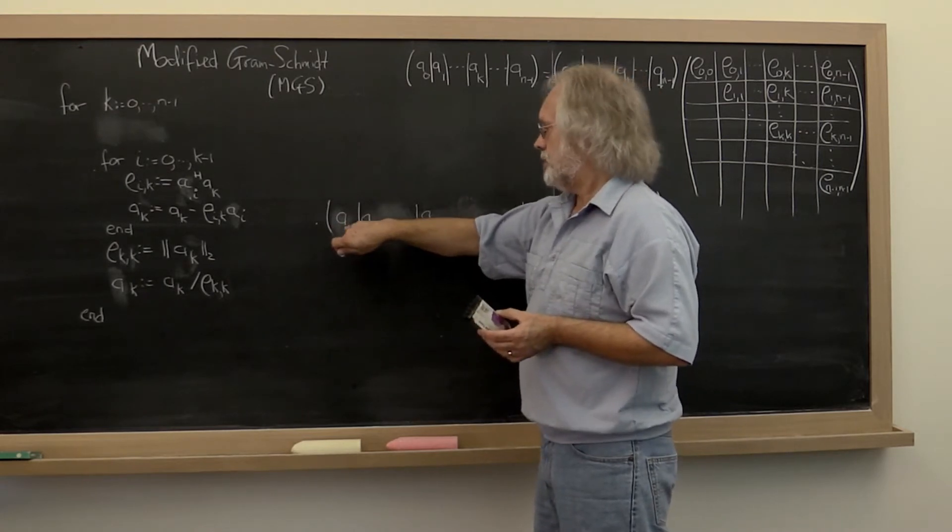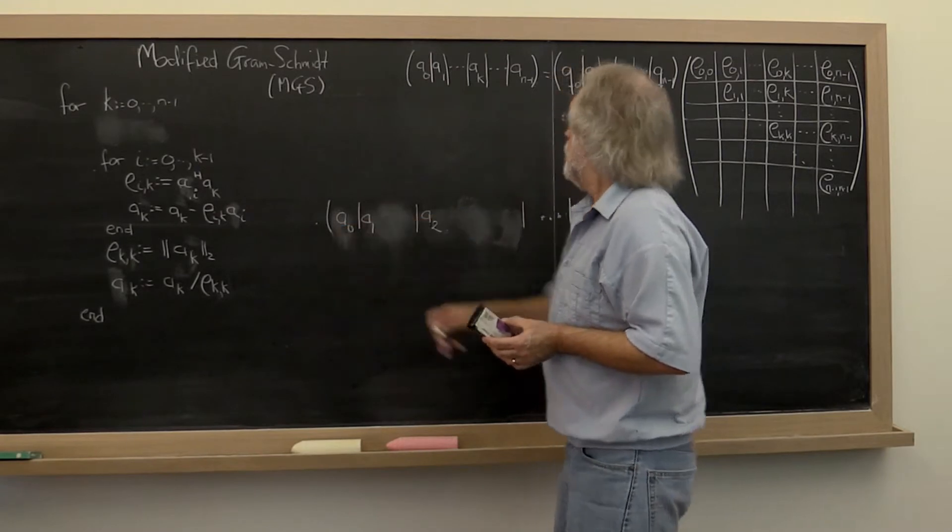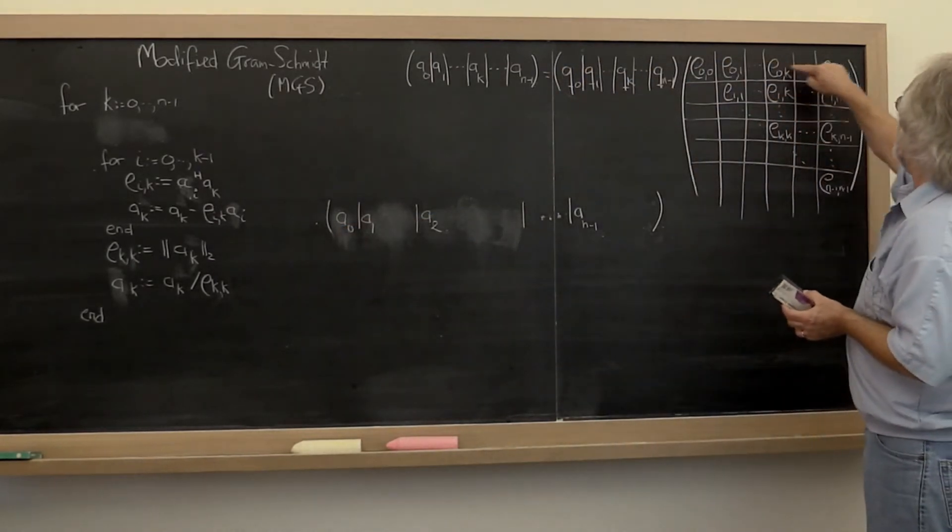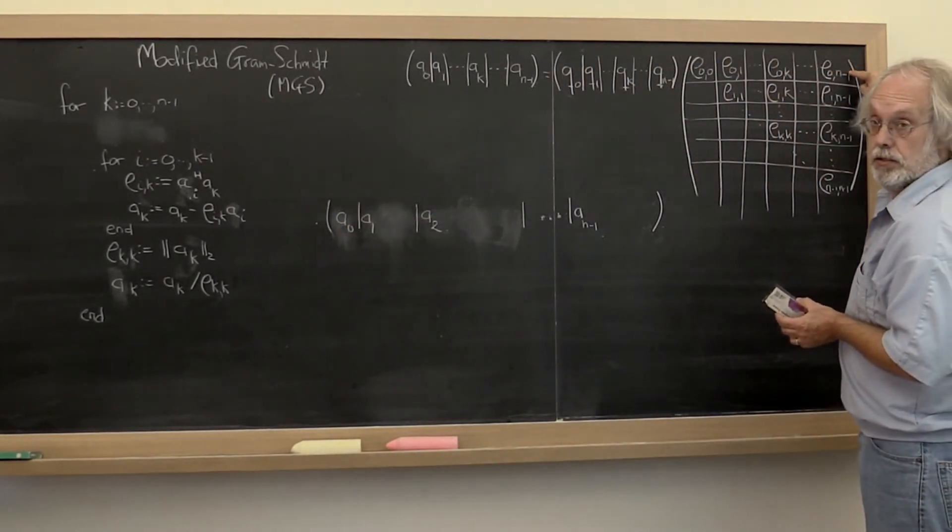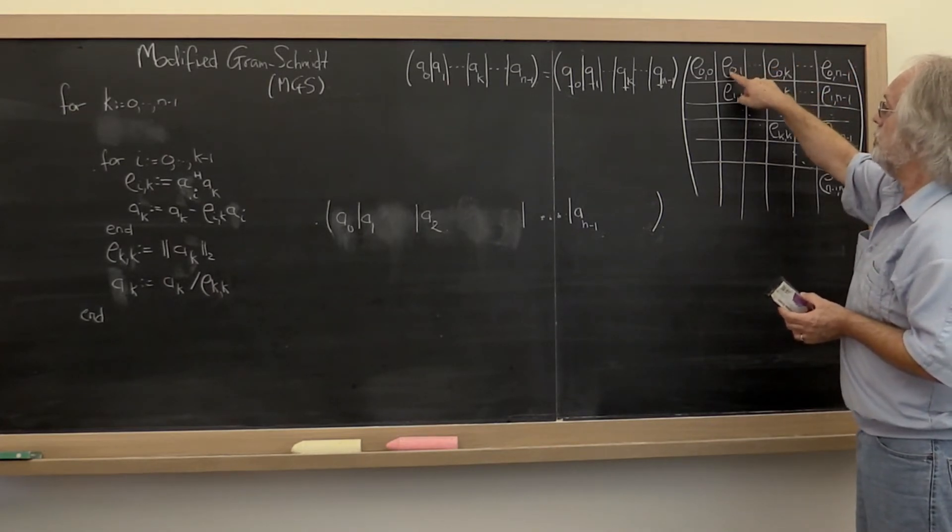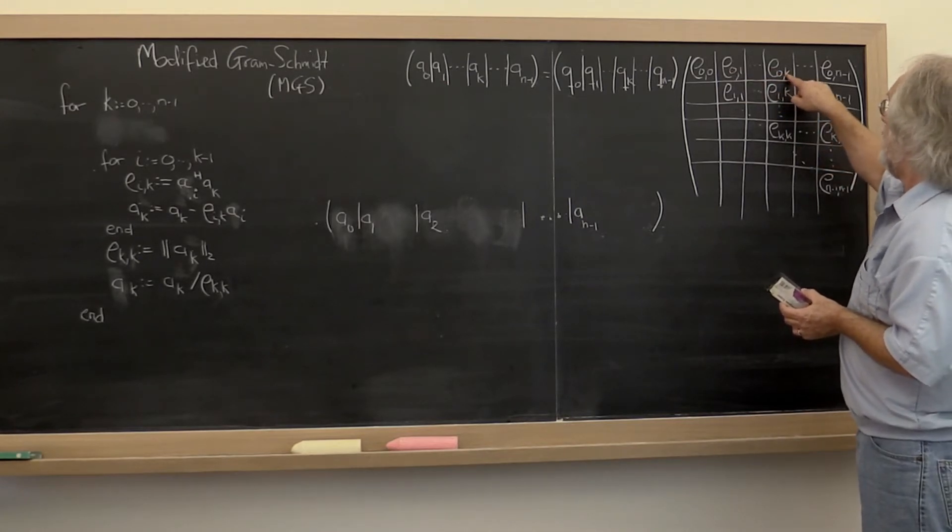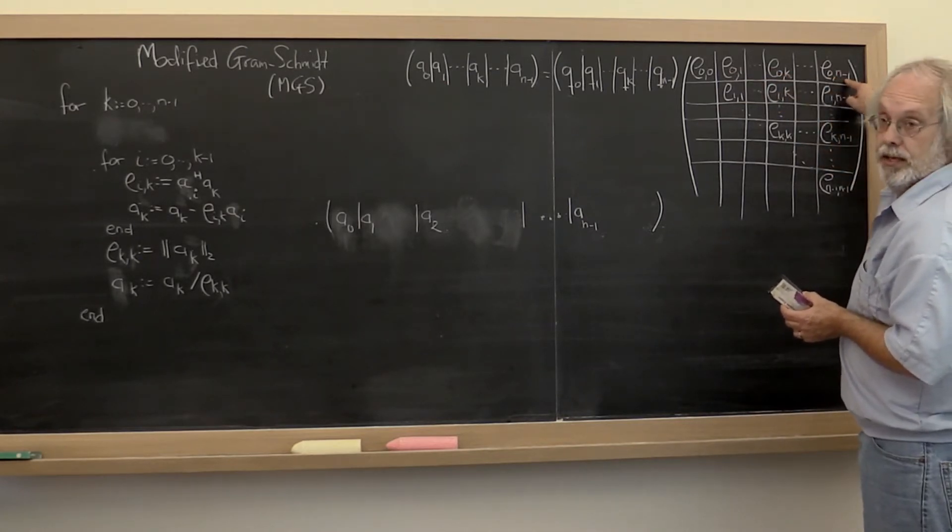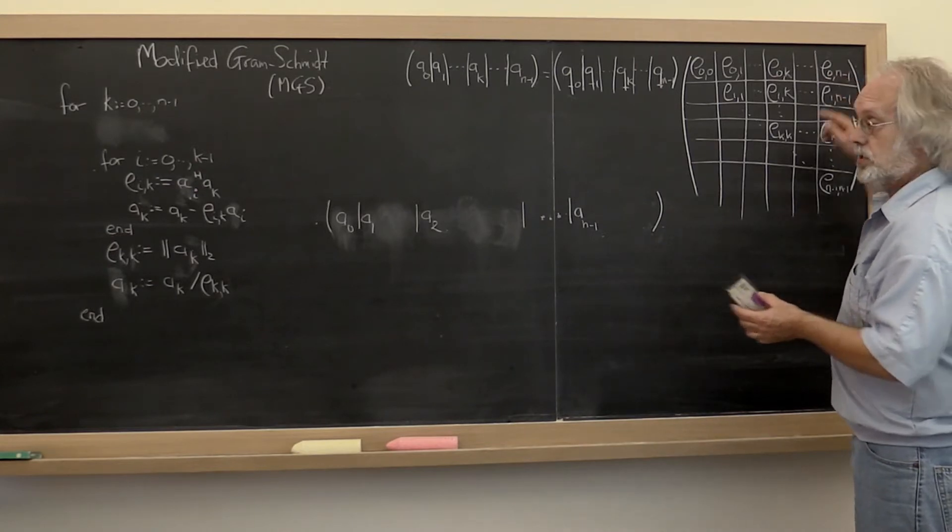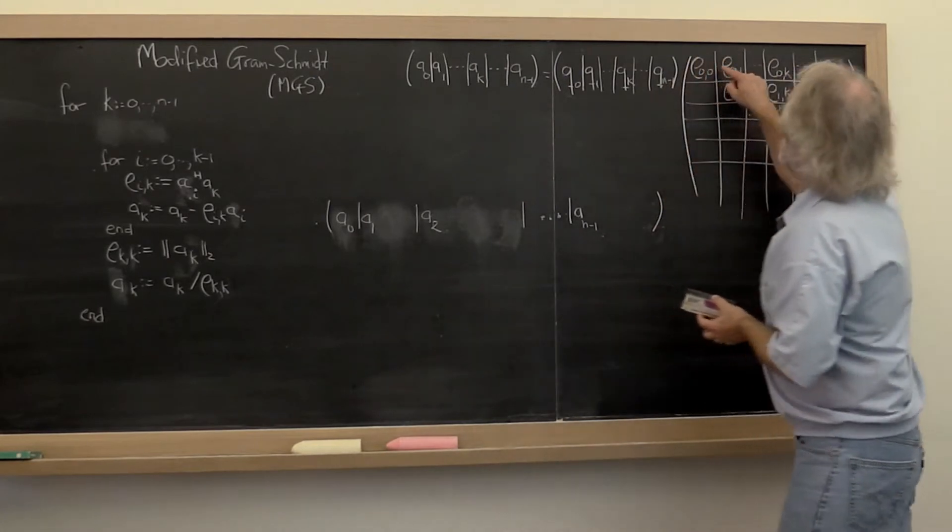What if as soon as we actually have computed Q, we compute all of these coefficients right here? We can do that because these are just the dot products of Q with A1, Q with K, Q with A n minus 1, which is sitting in our matrix here. So we could go ahead and compute all of these.